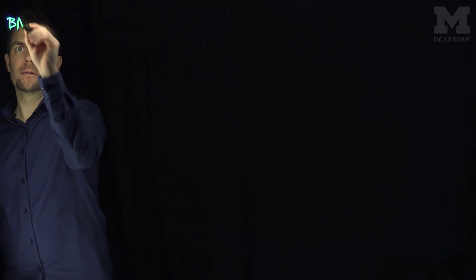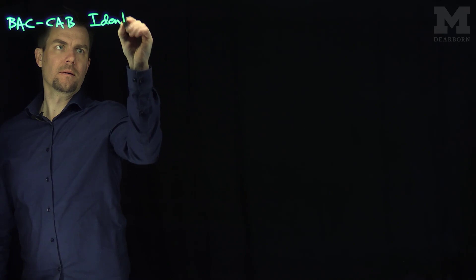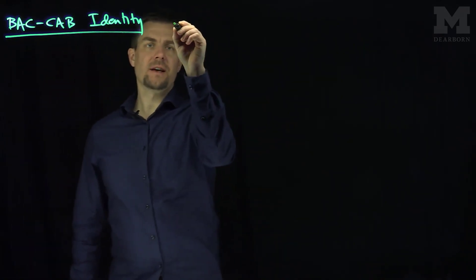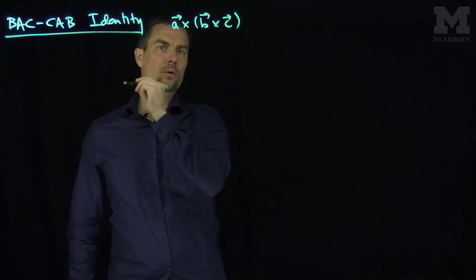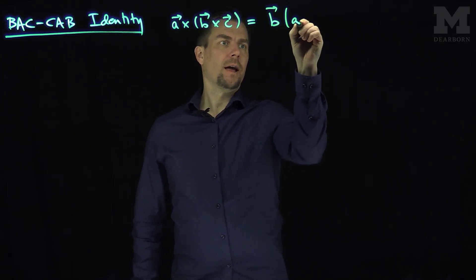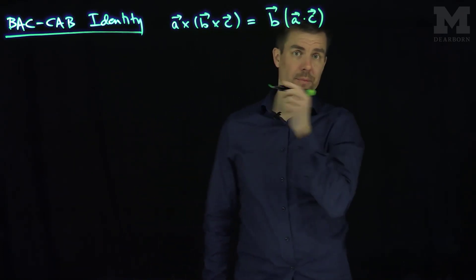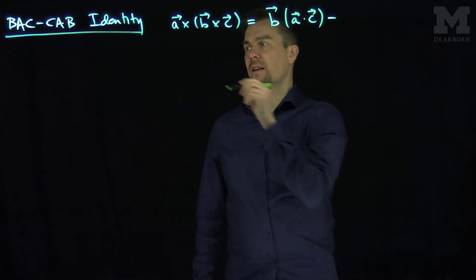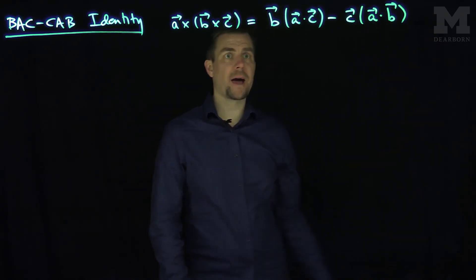Hello students. In this video we'll prove the BAC-CAB identity. The BAC-CAB identity states that a vector a cross (b cross c) — the order of the parentheses matters — equals vector b times the scalar (a dot c), minus vector c times the scalar (a dot b). This is the BAC-CAB identity.